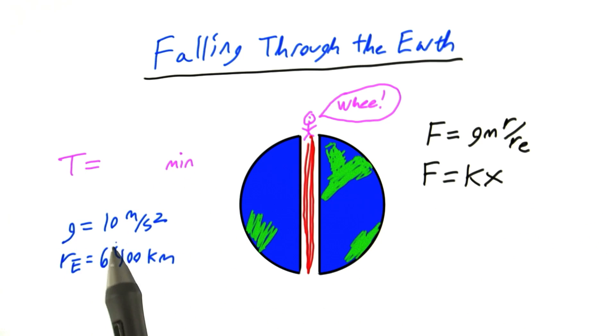For this problem, you should use 10 meters per second squared for little g, and you should use 6,400 kilometers for the radius of the Earth. Good luck.